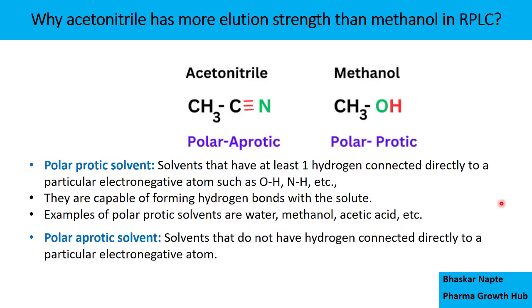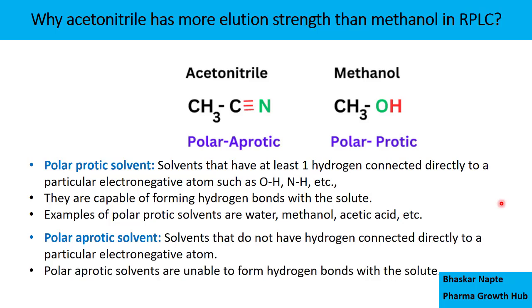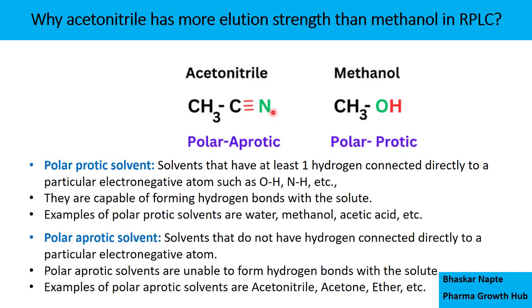Here is the definition of polar aprotic solvent. Polar aprotic solvents are unable to form hydrogen bonds with the solute — if the solute does not have the hydrogen connected to an electronegative atom, and neither does the aprotic solvent, then hydrogen bonding cannot occur. Examples of polar aprotic solvents include acetonitrile, acetone, ether, etc.